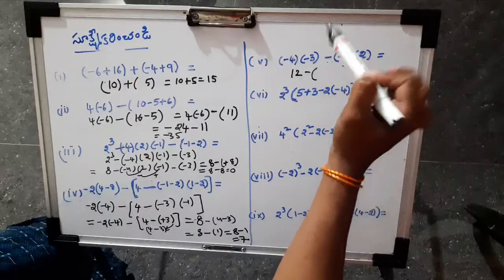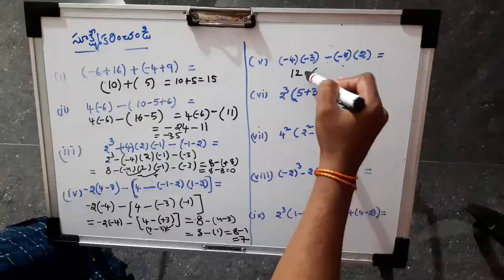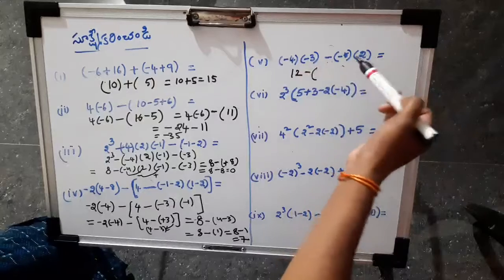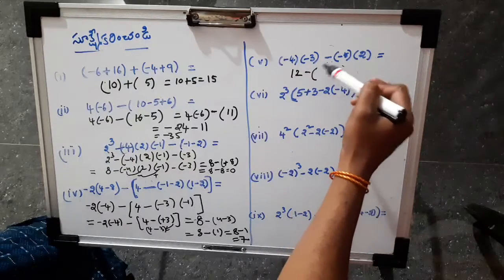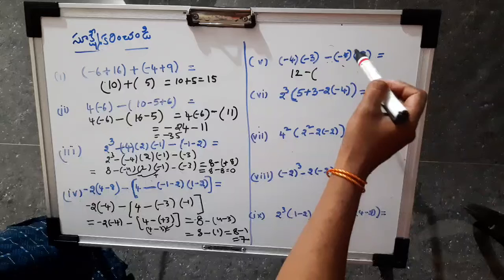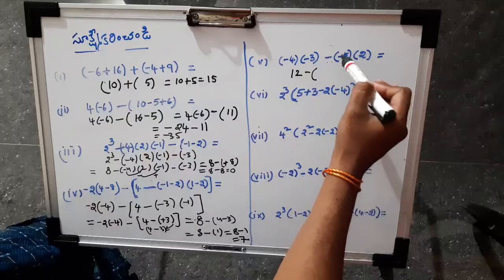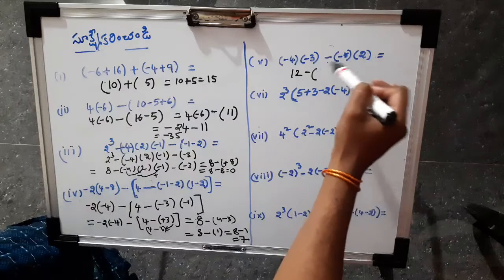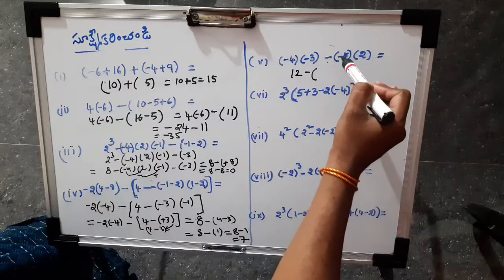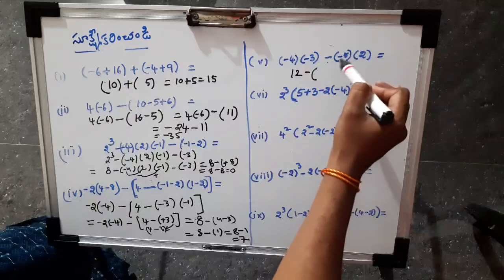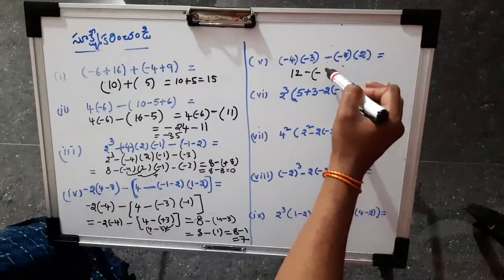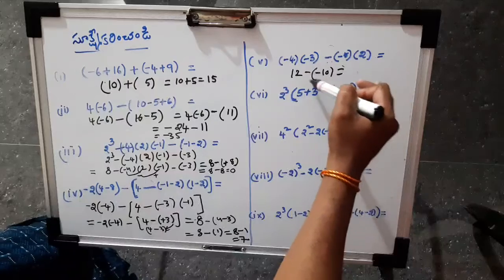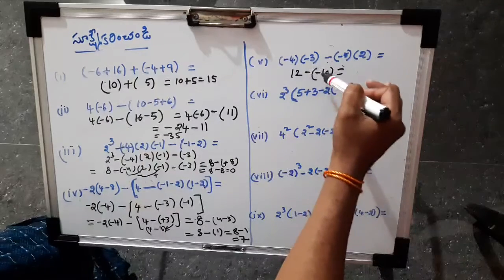We have to start with the bracket, otherwise we have to start with the bracket. So, we have to start with the bracket. First, we will start with minus into plus and minus. The bracket is 10. Now, if you have a bracket, it will be minus or minus 10.